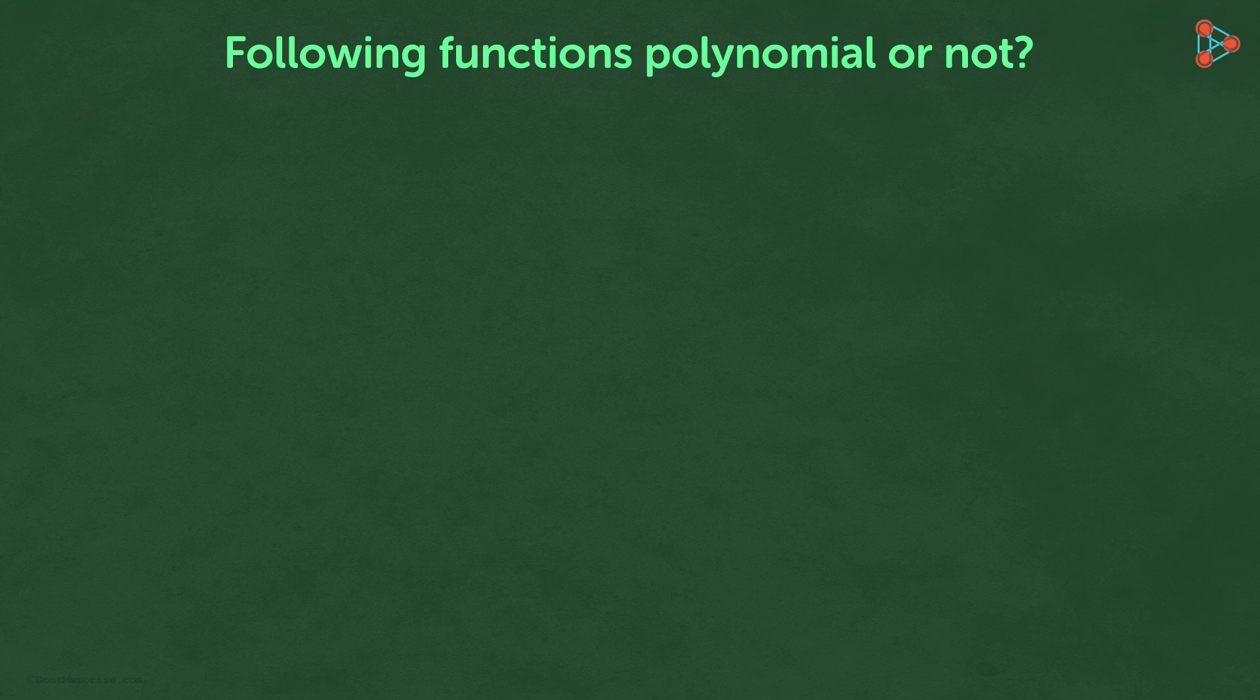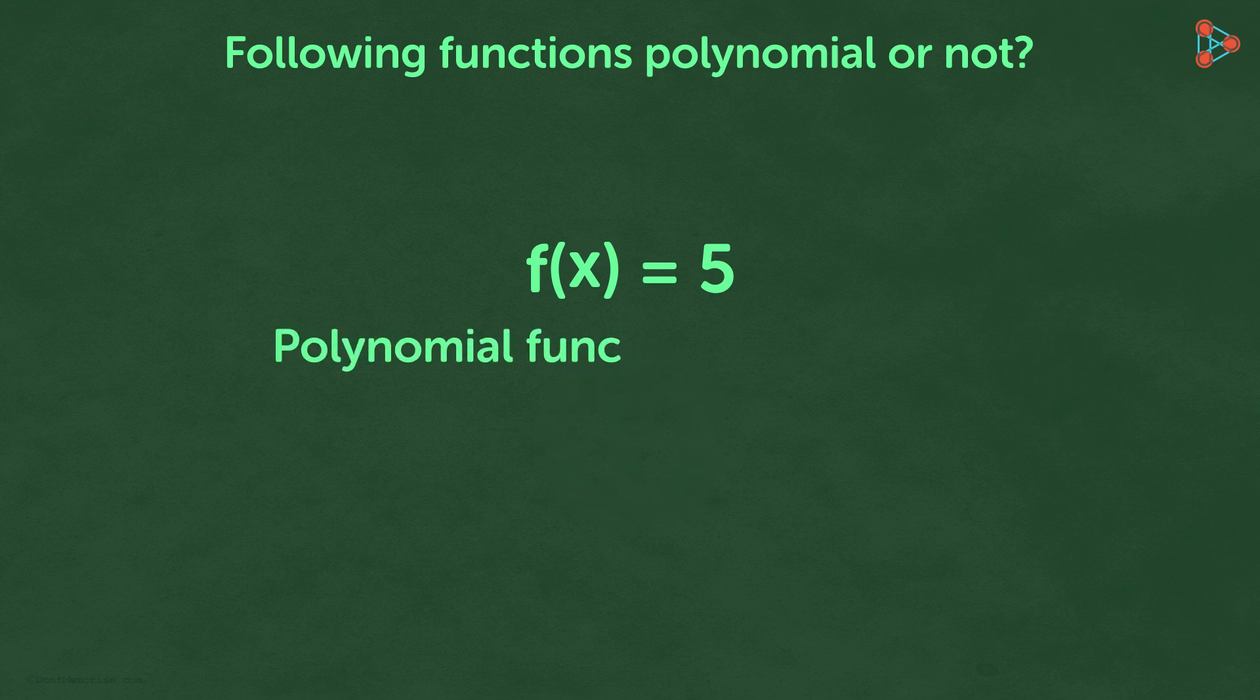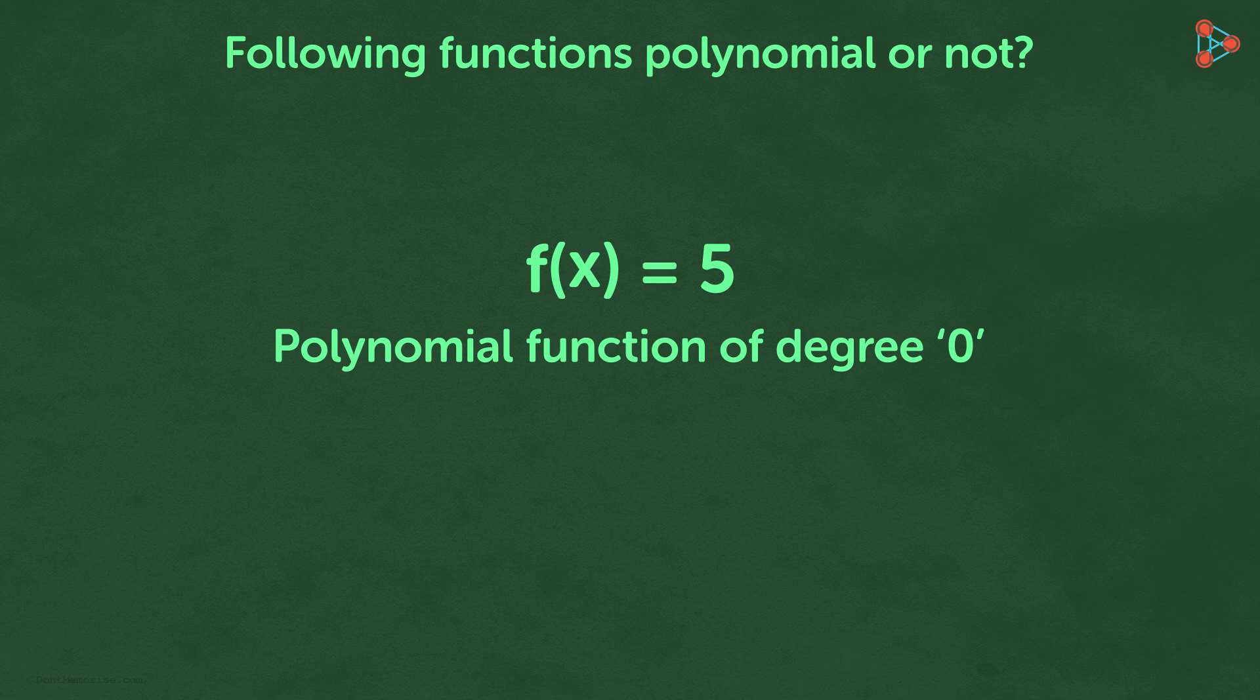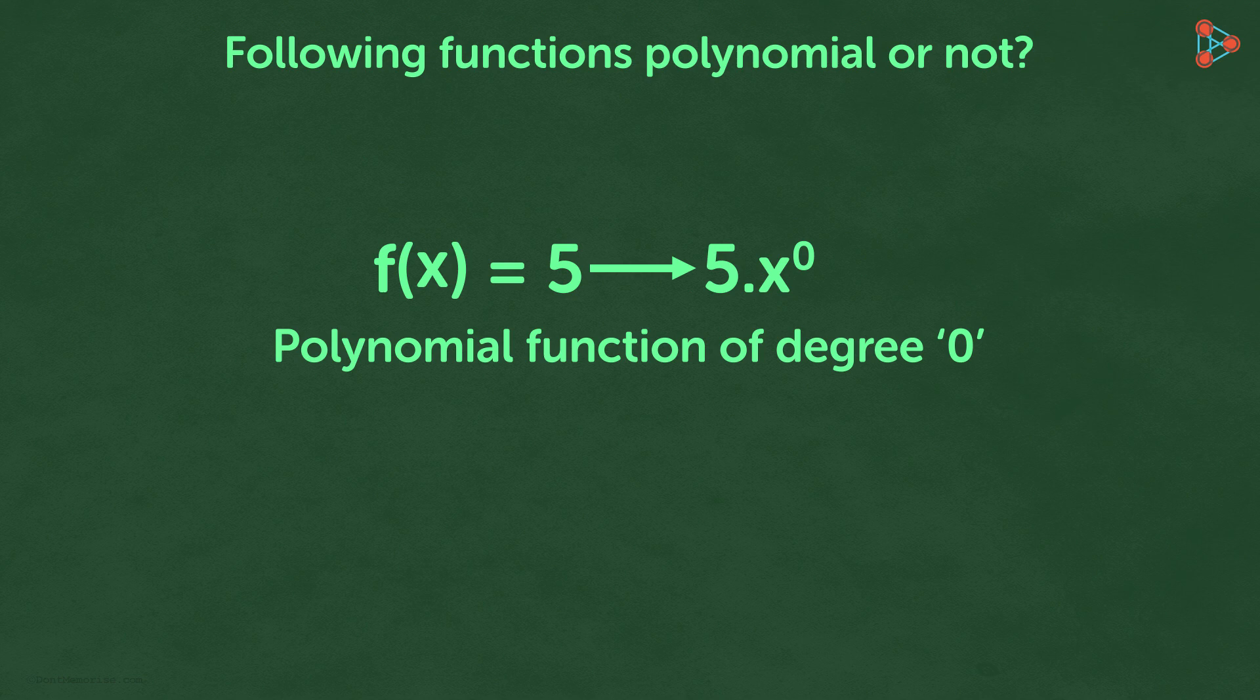Now let's test our understanding to see if the following functions are polynomial functions or not. Is f equal to 5 a polynomial function? Yes, it is a polynomial function of degree 0. This is because 5 can be written as 5 multiplied by x raised to 0. Here the highest degree of the function is 0.